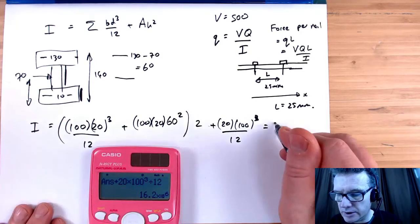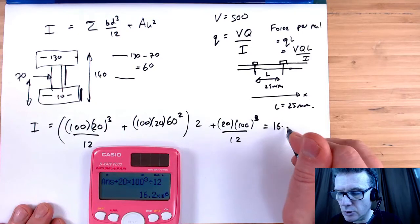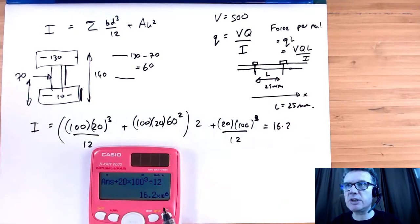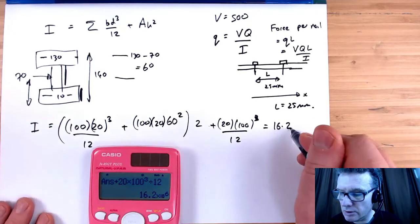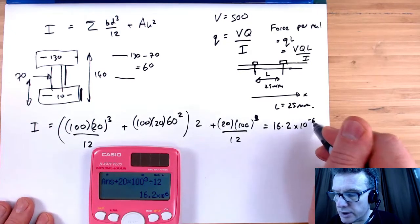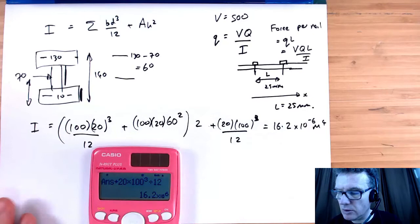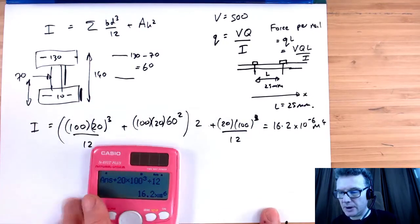So that is 16.2 times 10 to the 6. Let's change this into SI units, so that becomes times 10 to the minus 6 meters to the power of 4. Okay, so that's my I.